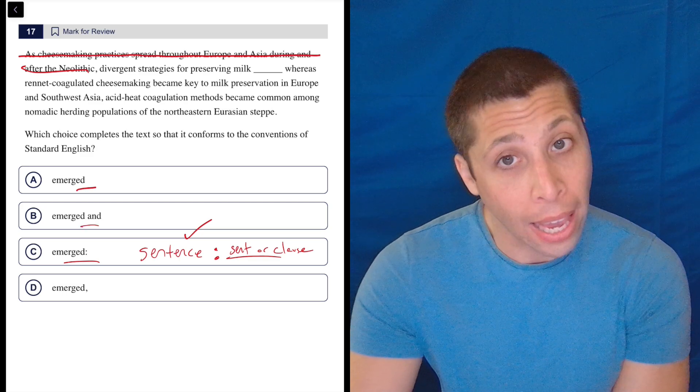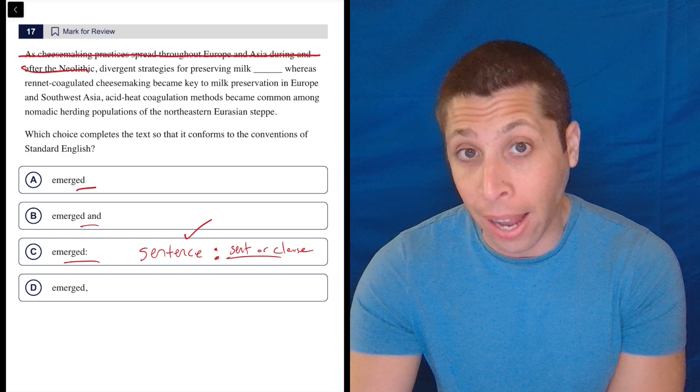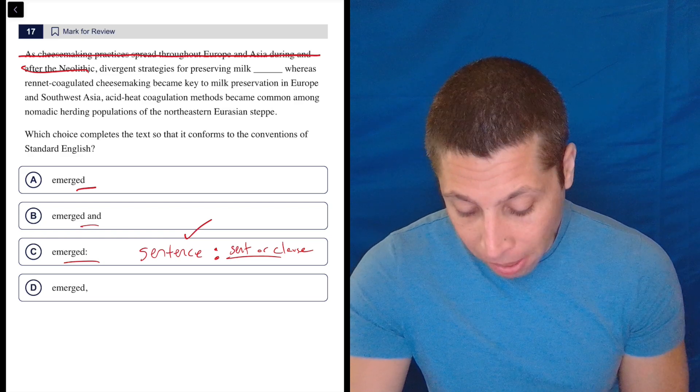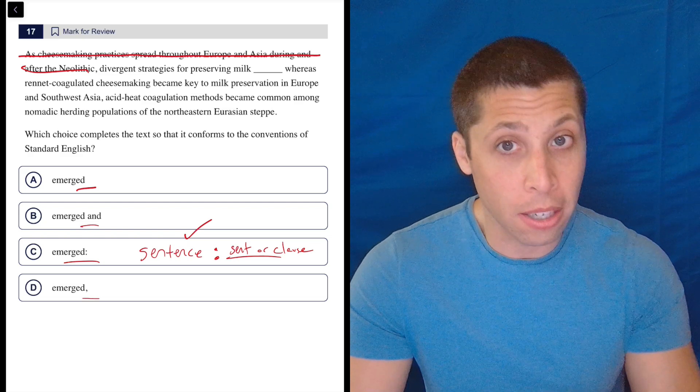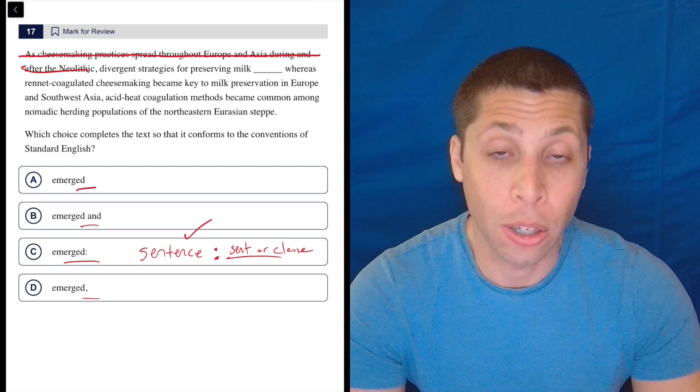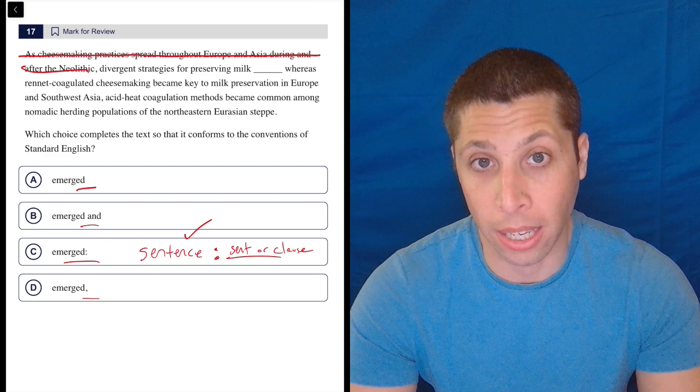We could do a conjunction like 'and,' but we would need a comma with that. So 'and' is kind of scary by itself. And maybe a comma by itself could connect another clause here, but we have to then think about how the colon and the comma would be different for connecting clauses.